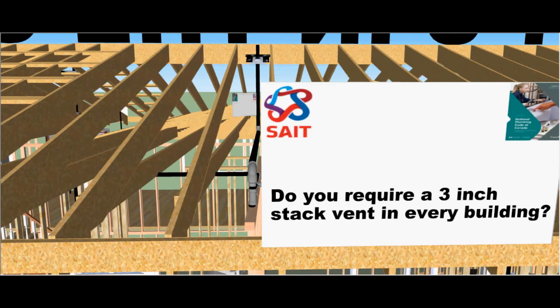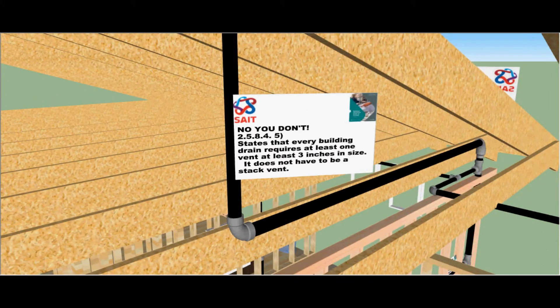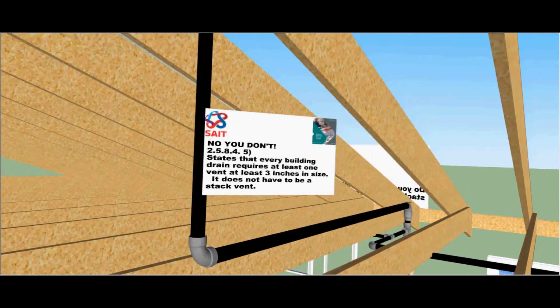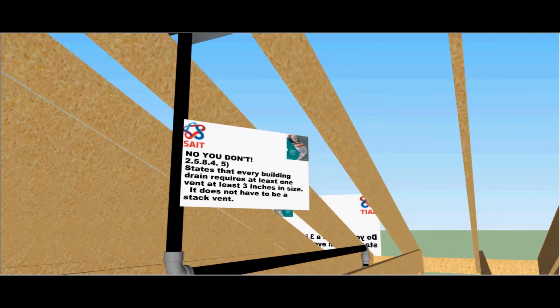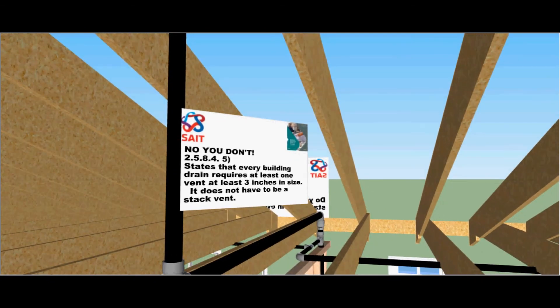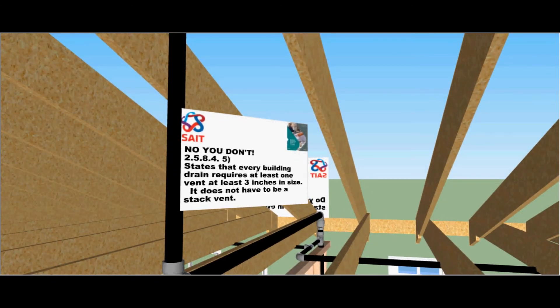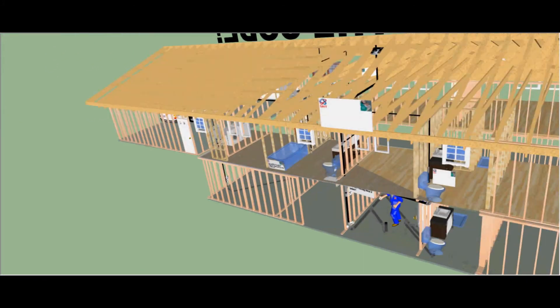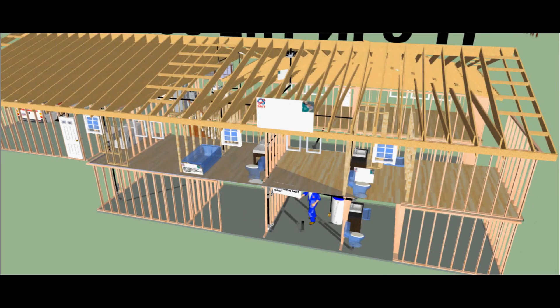Do you require a 3 inch stack vent in every building? No you don't. Clause 2584 subsection 5 states that every building drain requires at least one vent at least 3 inches in size. It does not have to be a stack vent. It could be a branch vent, a continuous vent, or any other type of vent as long as it's 3 inches in size.